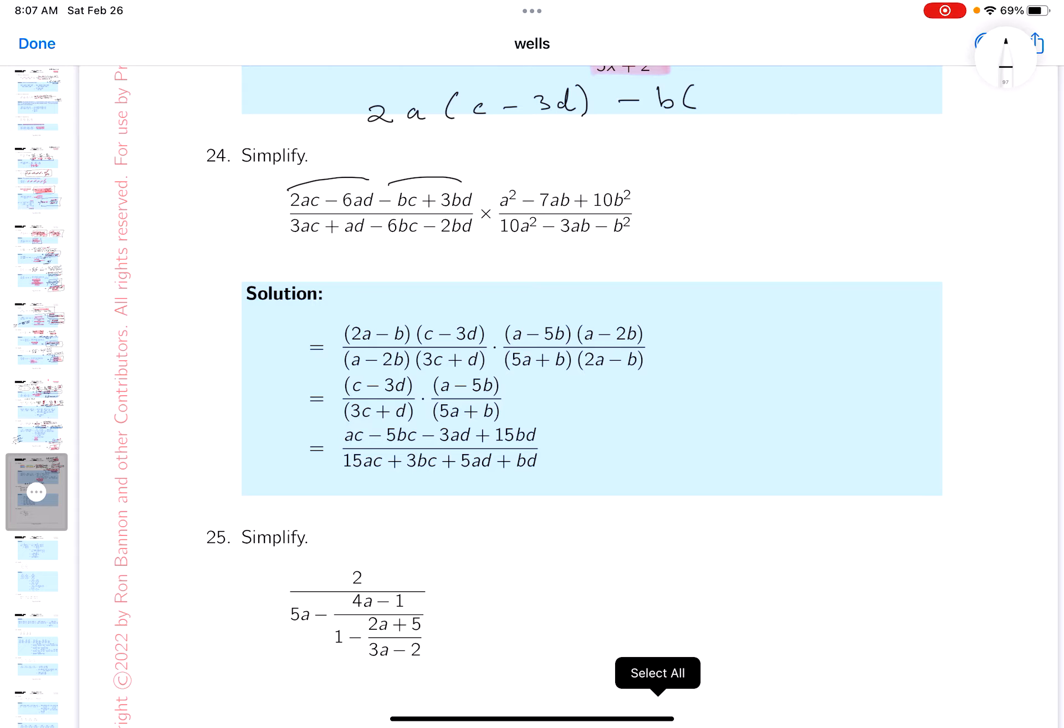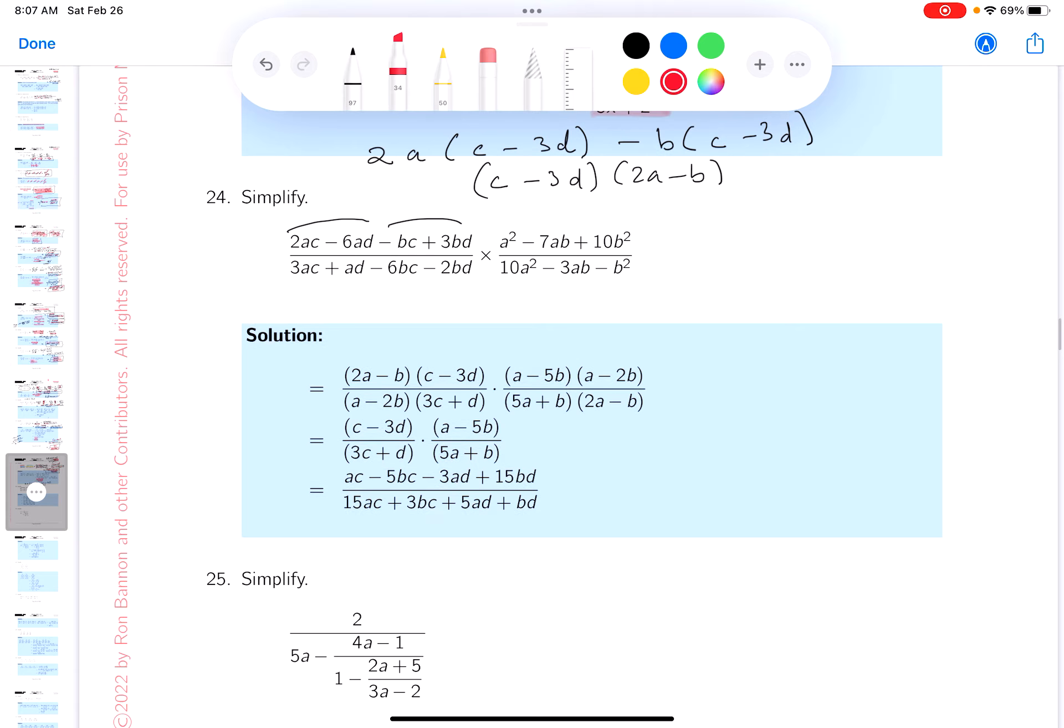And we're left with c minus 3d. I clearly see that factoring because there's a common factor between those two terms now, which is c minus 3d times 2a minus b.